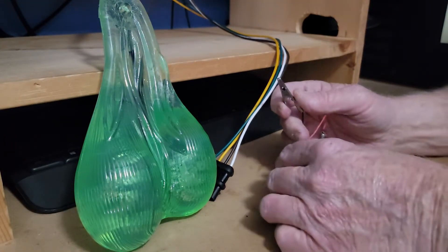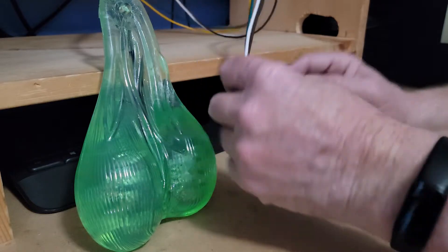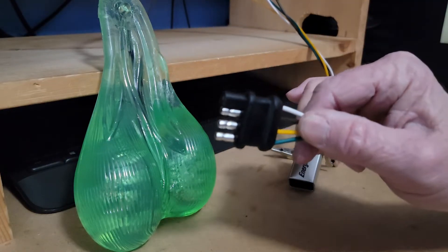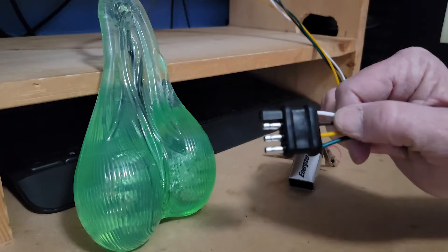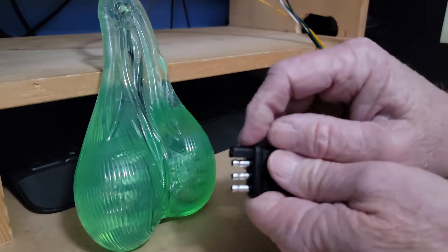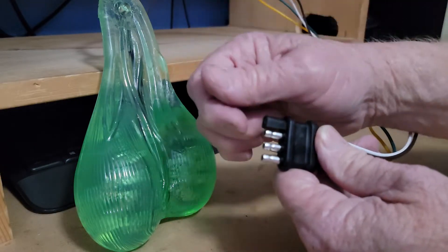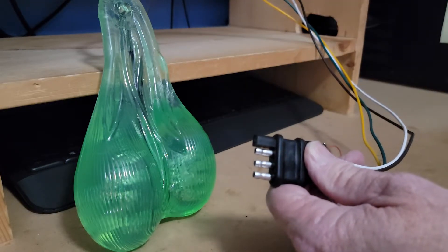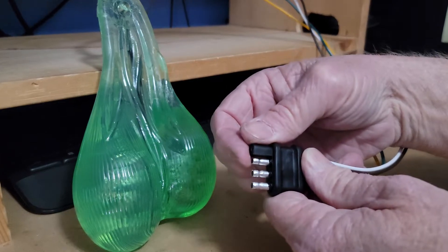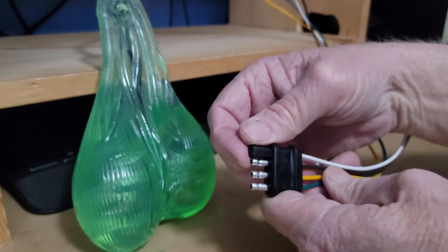On your plug, the black or the shielded one is your ground, and then the next one down is your running lights, and then your right and left turn signals.